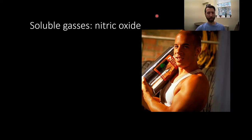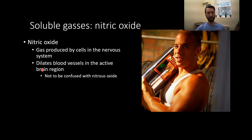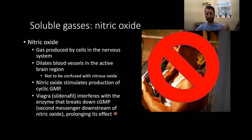Let's talk about the soluble gas nitric oxide — not to be confused with nitrous oxide, the thing that Vin Diesel uses to make his cars go fast. Nitric oxide is a gas produced by cells in our nervous system. One of the effects of its signaling cascade is it dilates the blood vessels in the active region. One thing nitric oxide does is it stimulates the production of cyclic GMP. Cyclic GMP is important for all kinds of things, one of them being vasodilation.